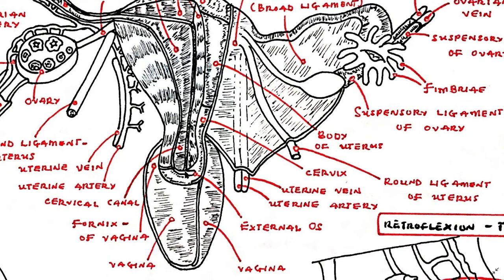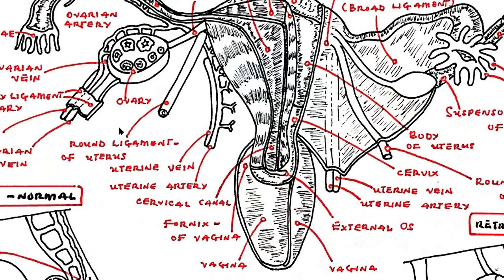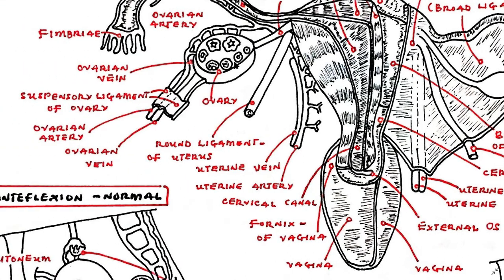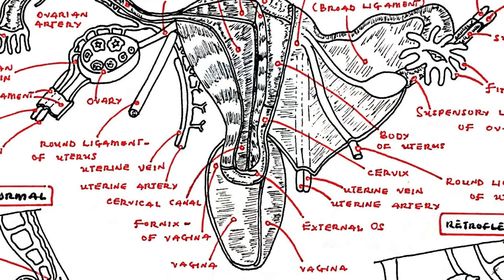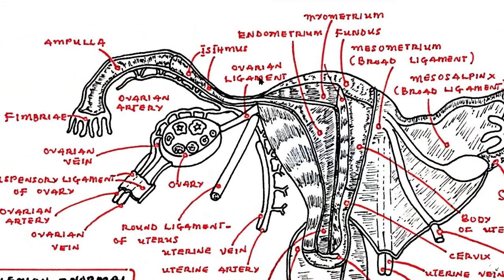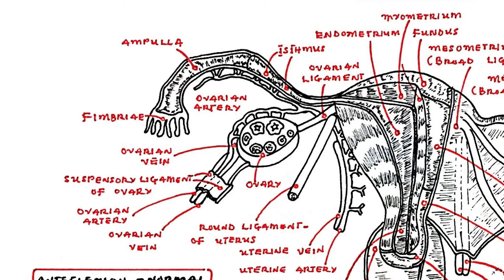The uterus is supplied by the uterine artery and drained by the uterine vein. The ovaries are whitish in color and located alongside the lateral wall of the uterus in a region called the ovarian fossa. The ovaries are connected to either side of the uterus by a fibrous cord known as the ovarian ligament, and to the body walls by the suspensory ligament of the ovaries, which is a posterior extension of the broad ligament. The part of the broad ligament that covers the ovary is known as the mesovarium.